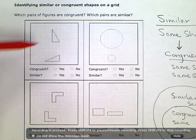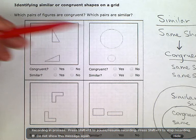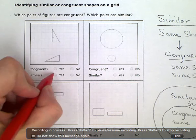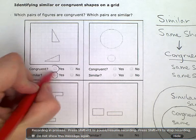So, if I look at this one, these two are the same shape. So, I can say they are similar and they're the same size. So, they are also congruent.